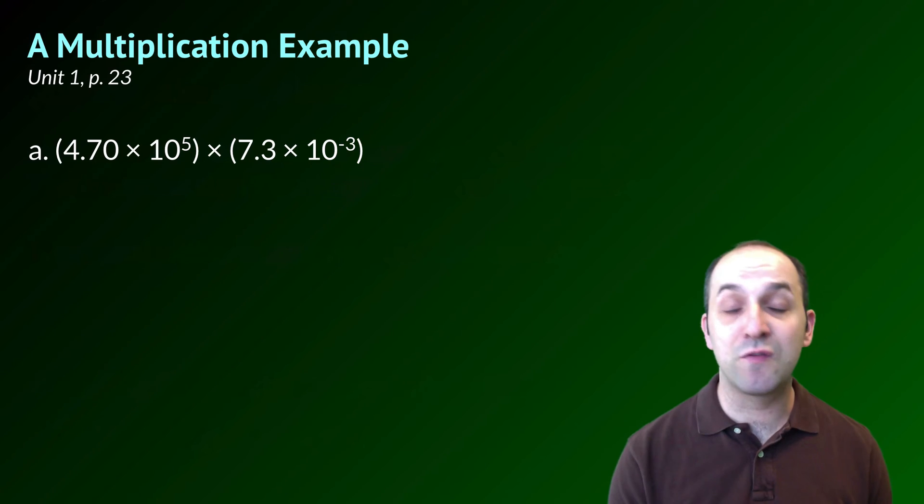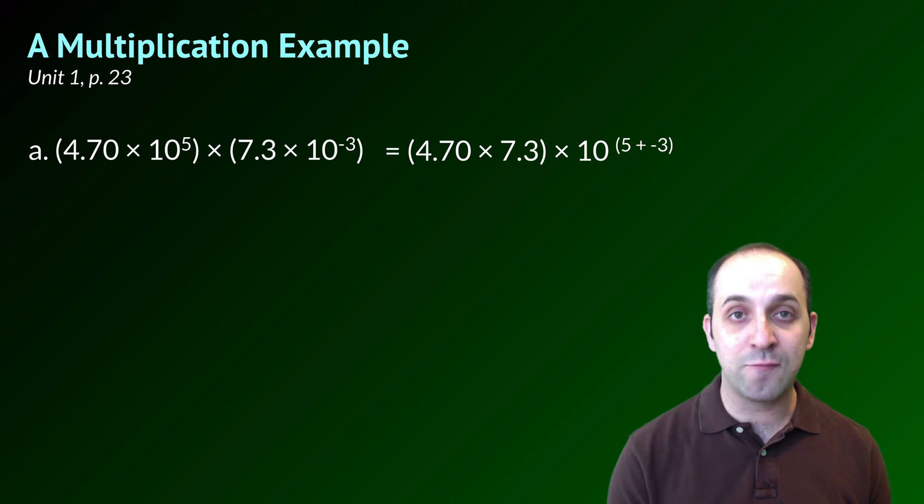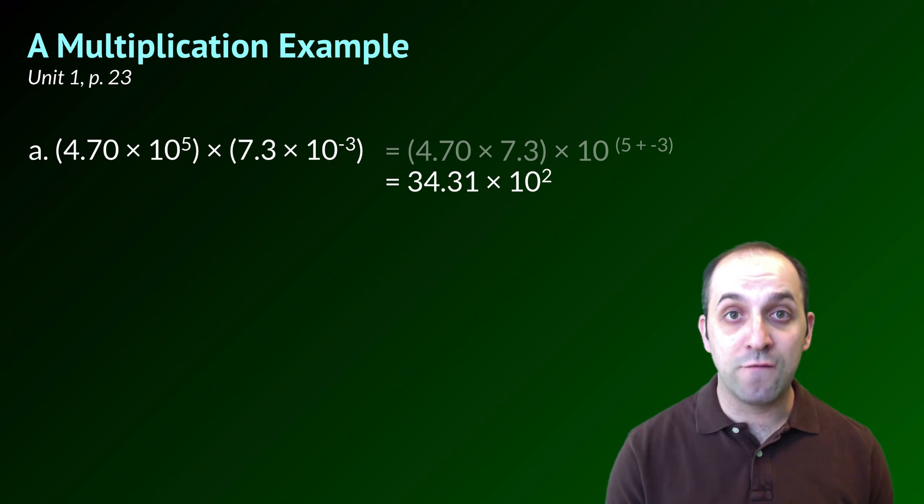Here's a multiplication example from page 23 of our unit packet. We're going to multiply 4.70 times 10 to the fifth by 7.3 times 10 to the negative third. I've actually written it out to help you see what's going to happen. We're going to wind up multiplying 4.70 by 7.3. And then we'll deal with our exponential calculation. A multiplication of 10 to the fifth by 10 to the negative third is going to be equal to 10 to the power of 5 plus negative 3. Once we do our coefficient math, we're getting at 34.31. And 10 to the 5 plus negative 3 is going to be equal to 10 to the second.